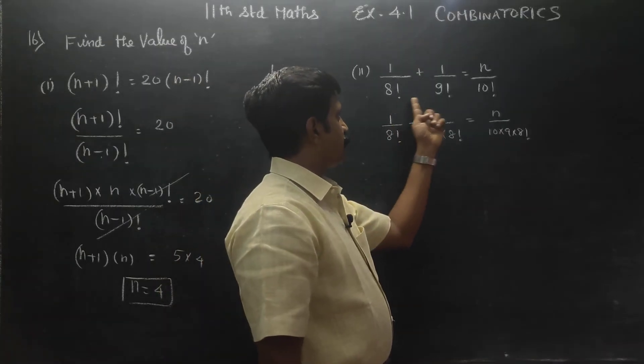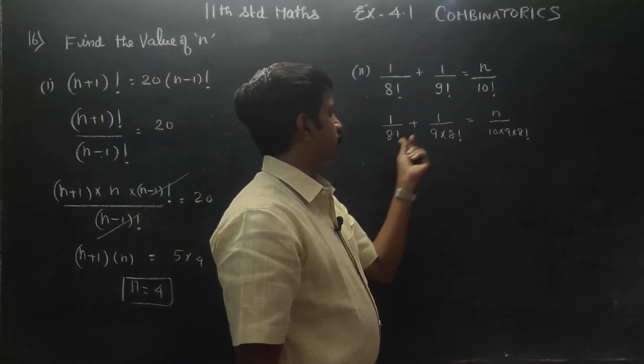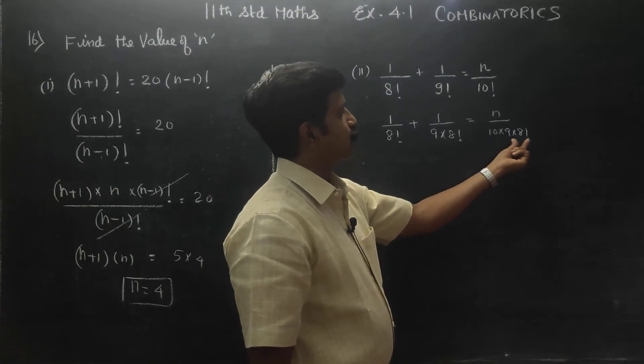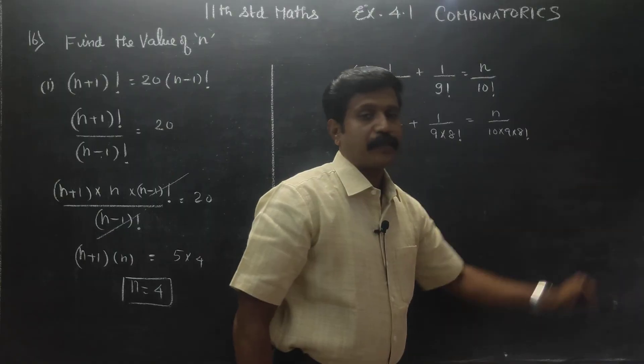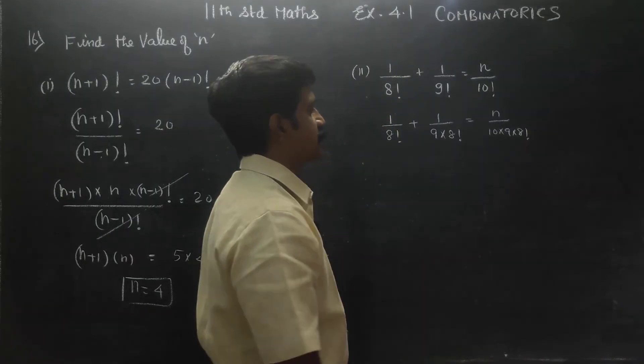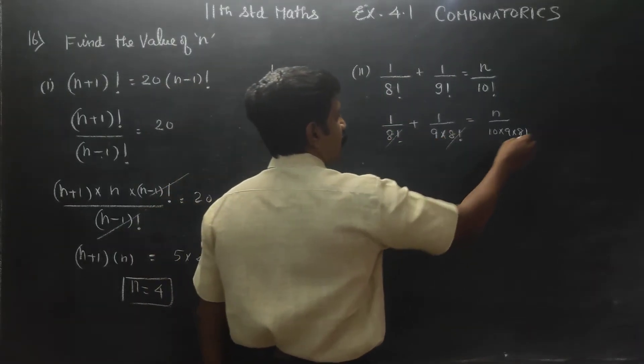This can be written as 10 into 9 into 8 factorial. This will stop. Minimum of enough factorials. Minimum number is target. That will lead down. If you do it, you will be able to multiply. This will be easy to cancel. 8 factorial, 8 factorial cancel.